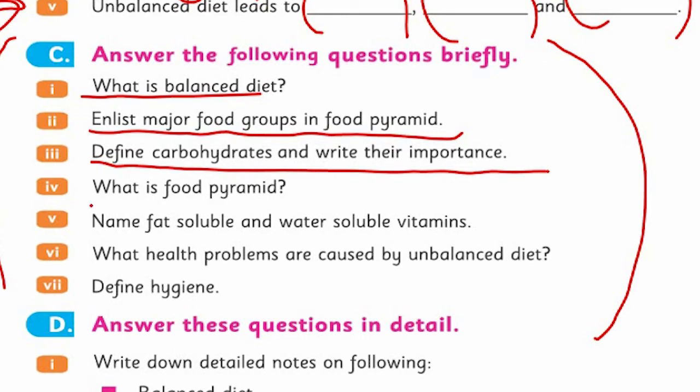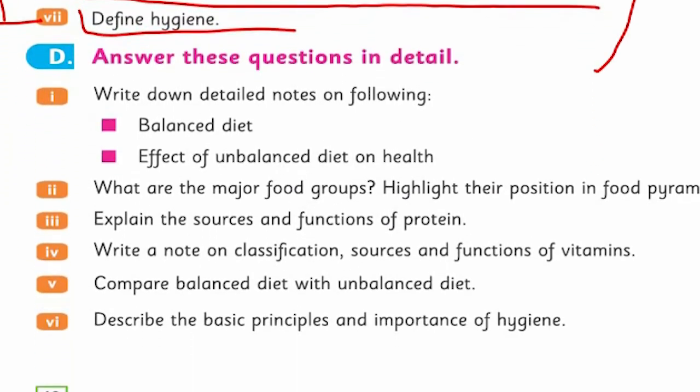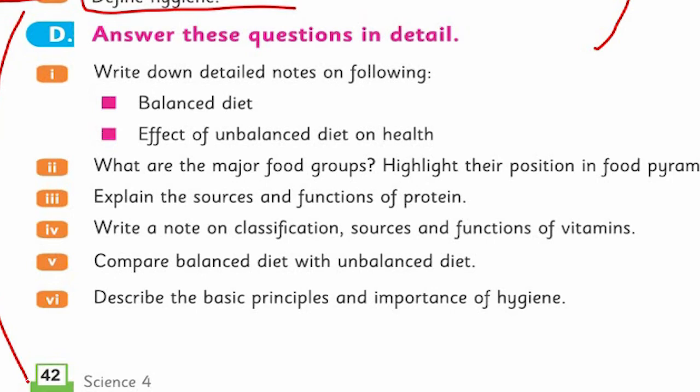What is food pyramid? We discussed pyramid. Name fat soluble and water soluble vitamins - I told you about two types of vitamins. One group is in fat, the other is water soluble. What health problems are caused by unbalanced diet? We talked about health problems in detail. Define hygiene.